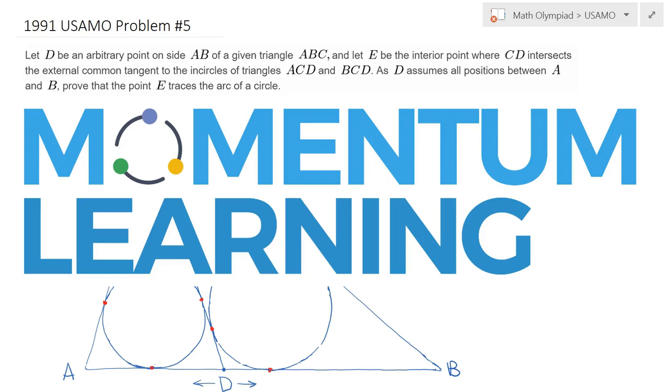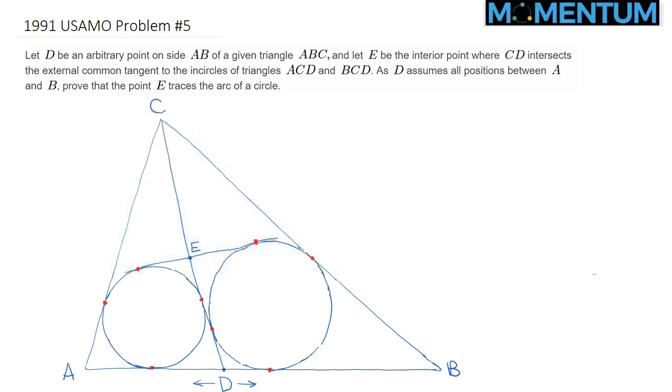This is 1991 USAMO problem number 5, and here is a view of this problem. We are given a triangle ABC, as well as a point D alongside AB of our triangle.